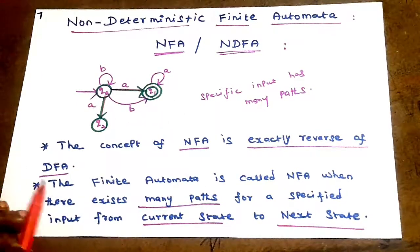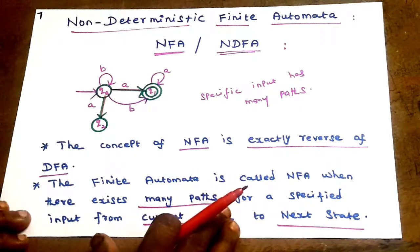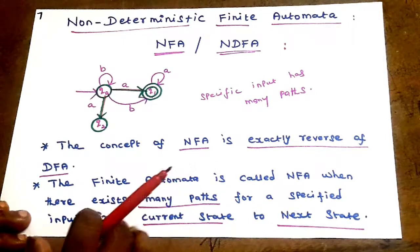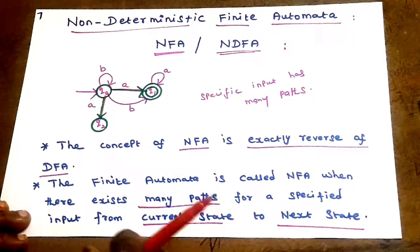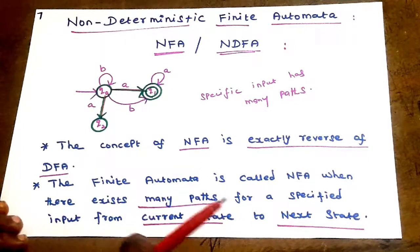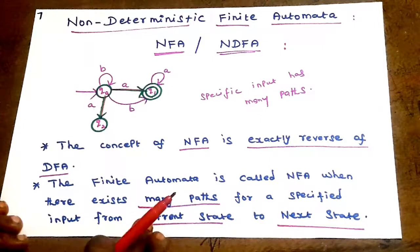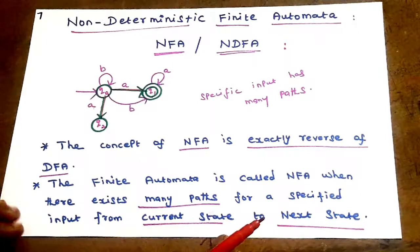In NFA, a specific input from a current state can lead to more than one path — many paths. This is Non-deterministic Finite Automata.